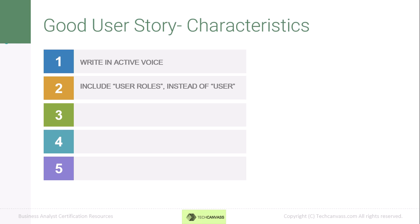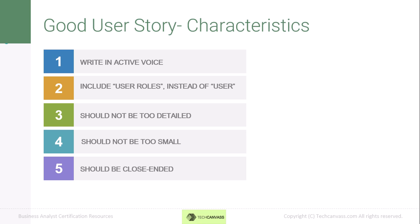Rather than using the generic word 'user,' we should use specific user roles to give more context to the user story. It should contain just sufficient information — not too detailed, for example including UI design features, but also not too small that it is unclear. It should be close-ended, meaning it should not leave the reader with doubts but should include precise information.